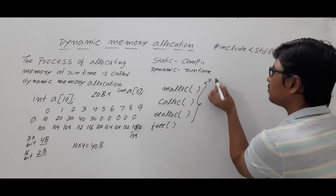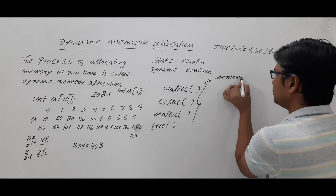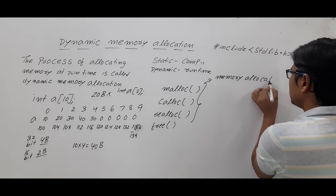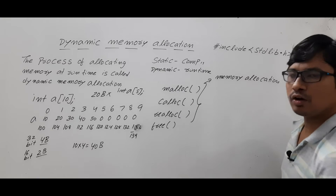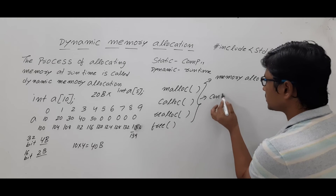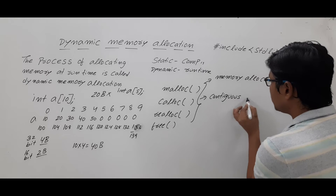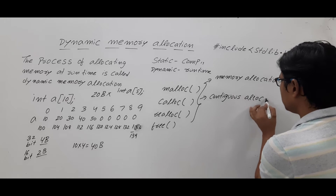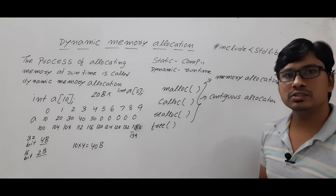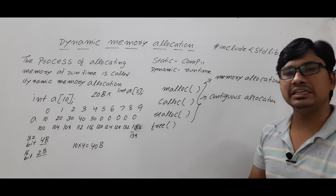The full form of malloc is memory allocation. The full form of calloc is contiguous allocation. Realloc is used to reallocate memory, and free is used to release the memory.